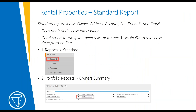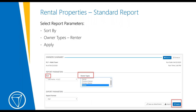Now we're going to move on to the standard report for your rental properties. The standard report already exists in TOPS and is going to show your owner name, address, count, lot number, phone number, and email. This report will not include any lease information, but it is a good report to run if you just need a list of all renters present and past — maybe so you can add lease dates to those renters and turn the renter flags on and off. To do so, go to Reports > Standard Reports, then under Portfolio Reports you have Owner Summary. The report parameters are simple: just the sort option, select your owner type, and apply.